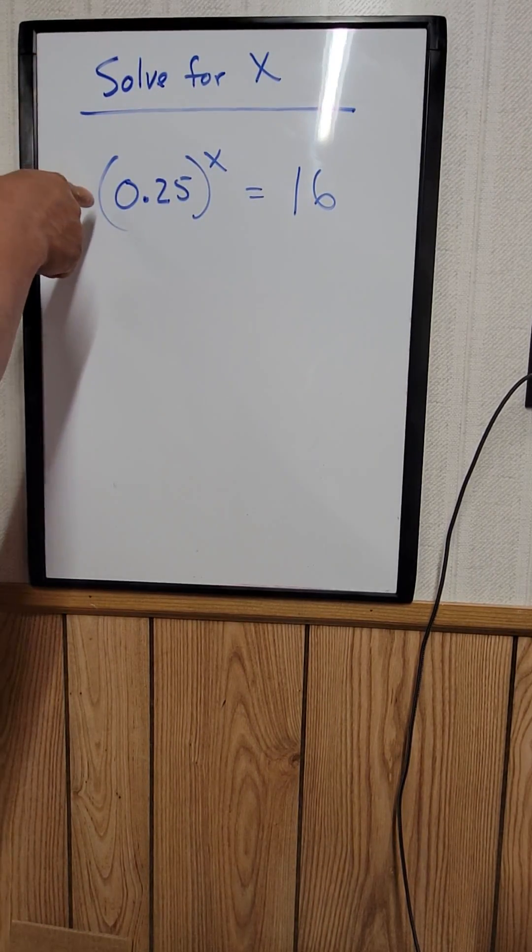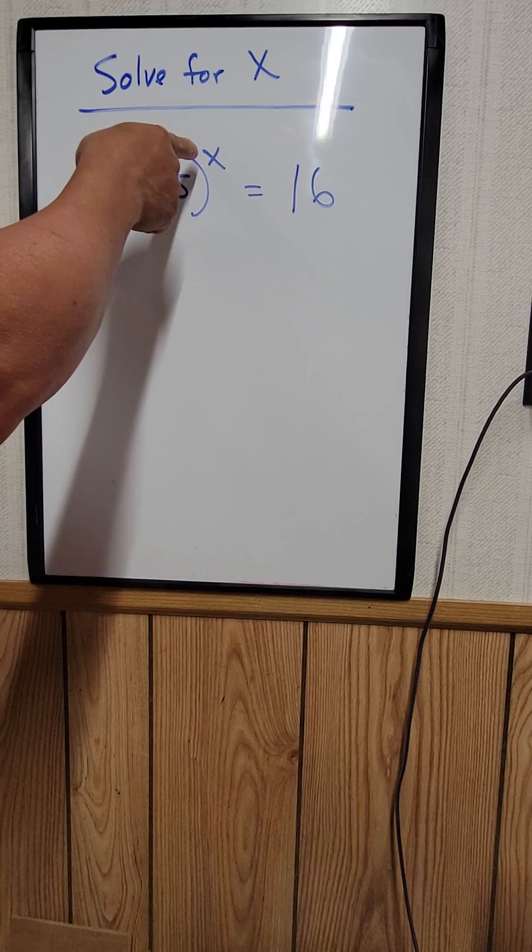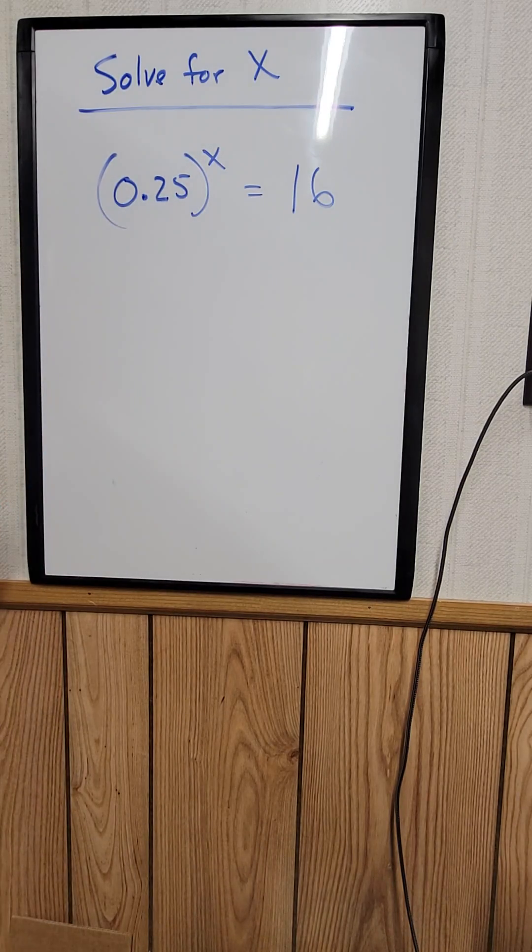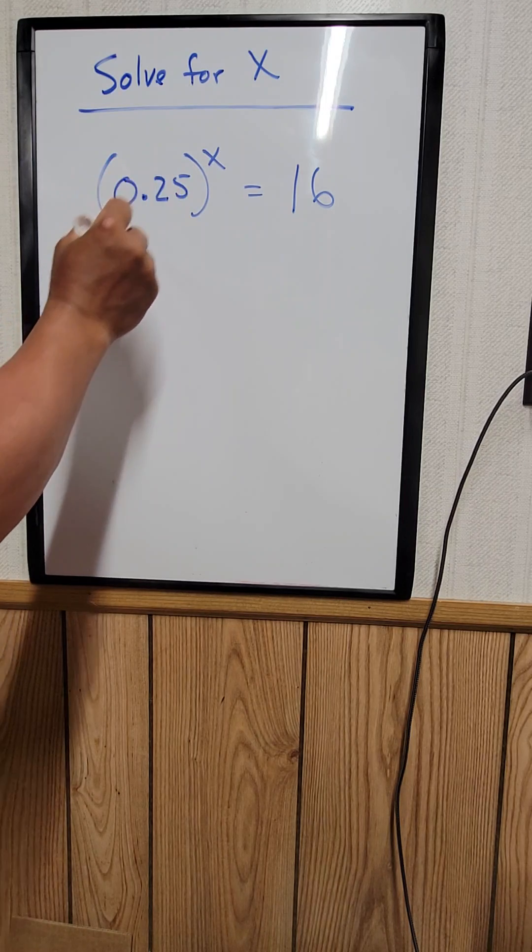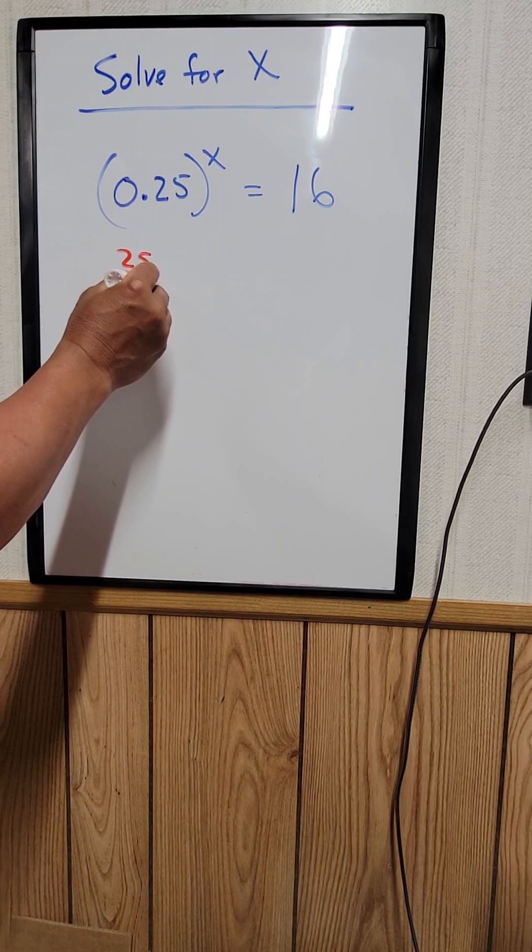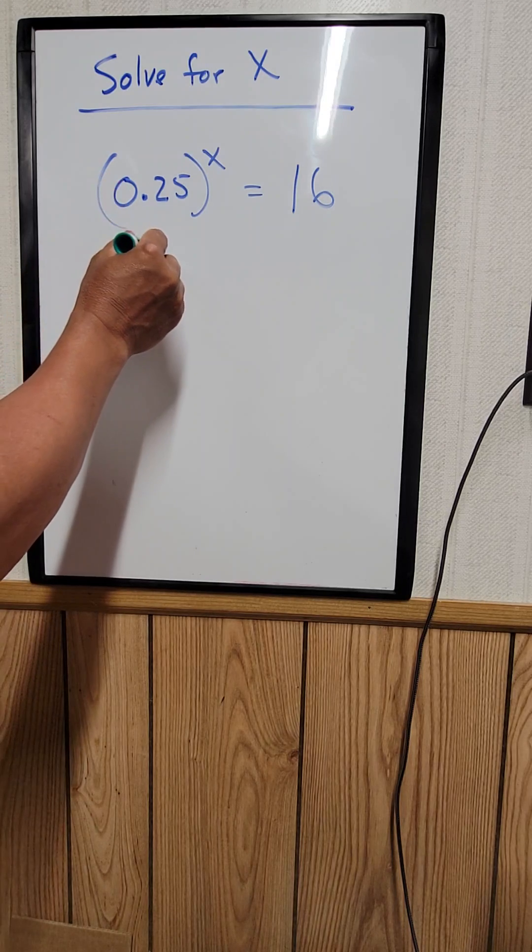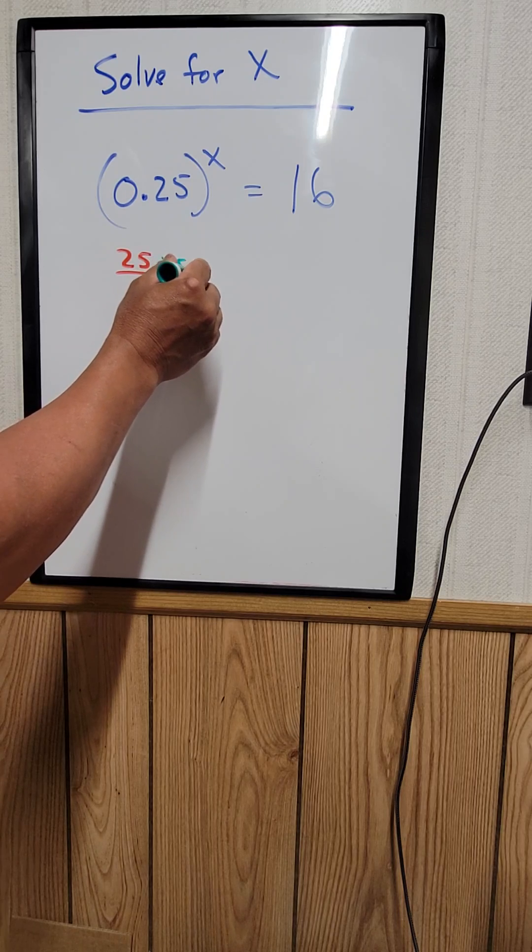Solve for x: 0.25 to the power x equals 16. You know that 0.25 can be converted to a fraction which equals 25 over 100. If you divide the top and the bottom by 25, this equals 1 over 4.